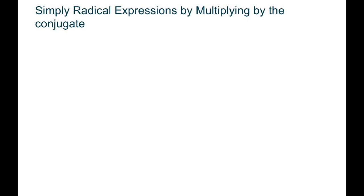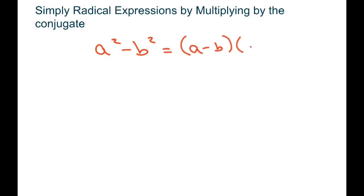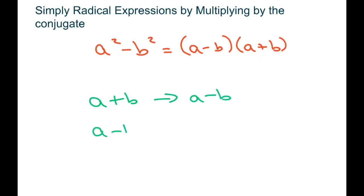Hi everyone. We're going to simplify radical expressions by multiplying by the conjugate. What I mean by the conjugate is based off your difference of squares factoring facts, which is that a squared minus b squared equals a minus b times a plus b. So basically, if you have something that has a plus b, then its conjugate is a minus b, and if you have a minus b, then its conjugate is a plus b.